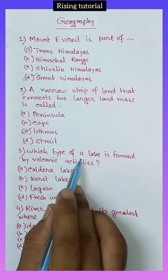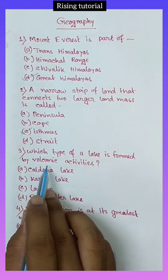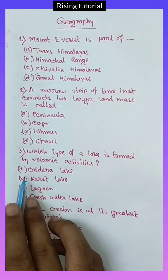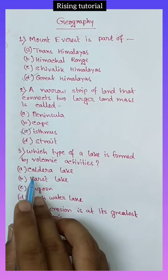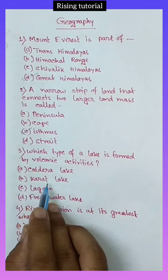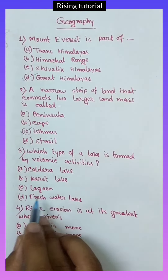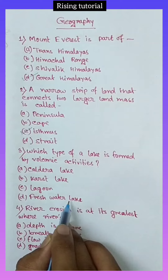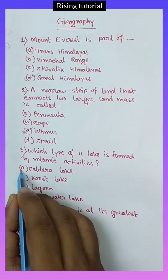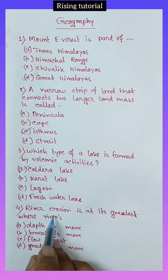Number 3. Which type of lake is formed by volcanic activities? Option A, Caldera Lake; option B, Karst Lake; option C, Lagoon; option D, Freshwater Lake. Answer key: option A, Caldera Lake.